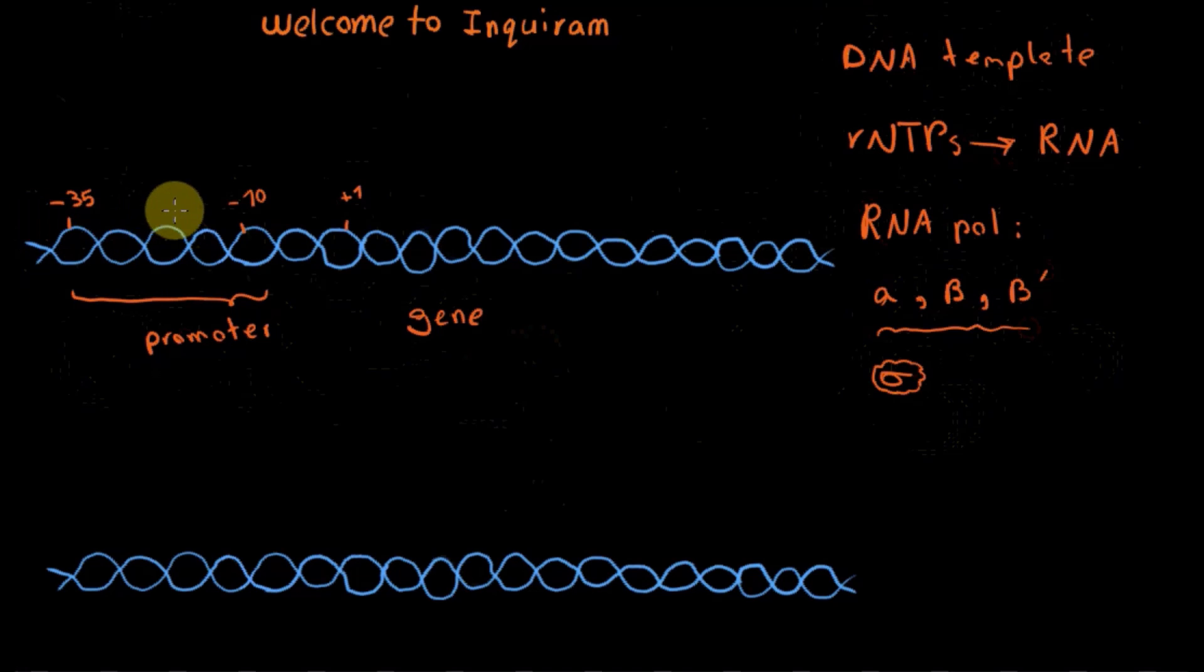These two elements are recognized by the sigma factor of RNA polymerase. If this one is our RNA polymerase, and in the middle I draw the sigma factor, which is around here. And I put the name sigma over here.